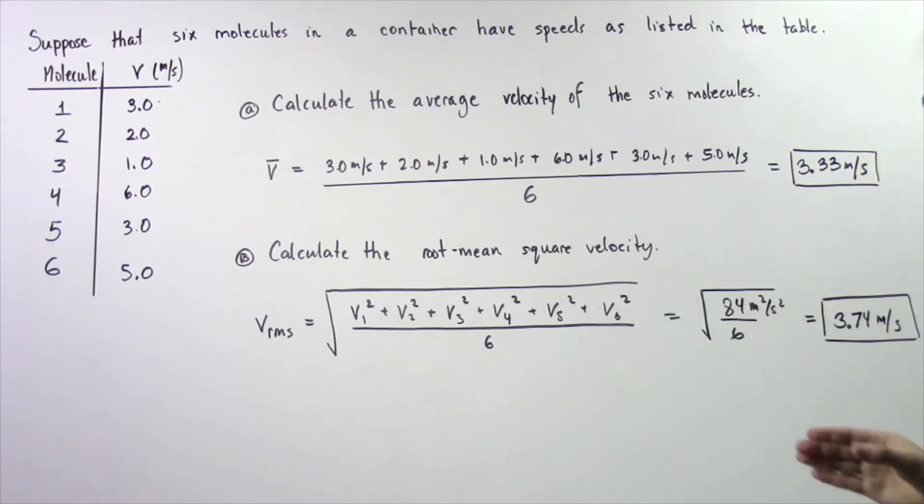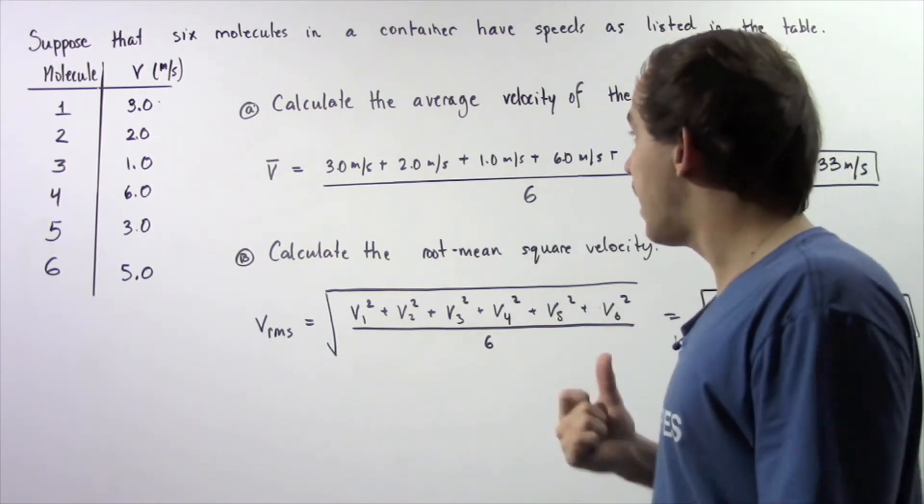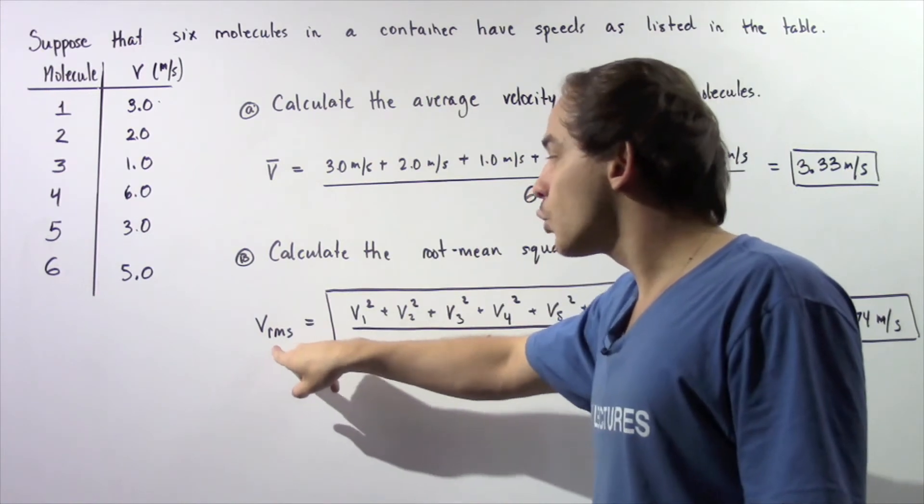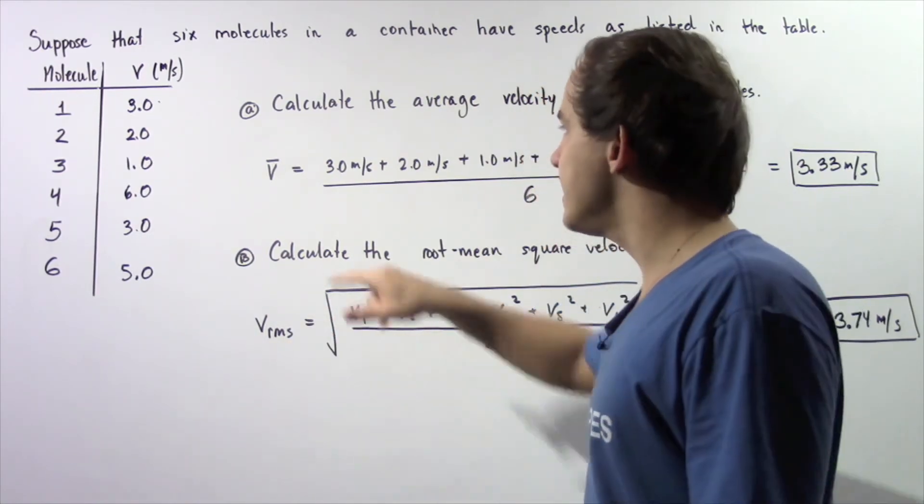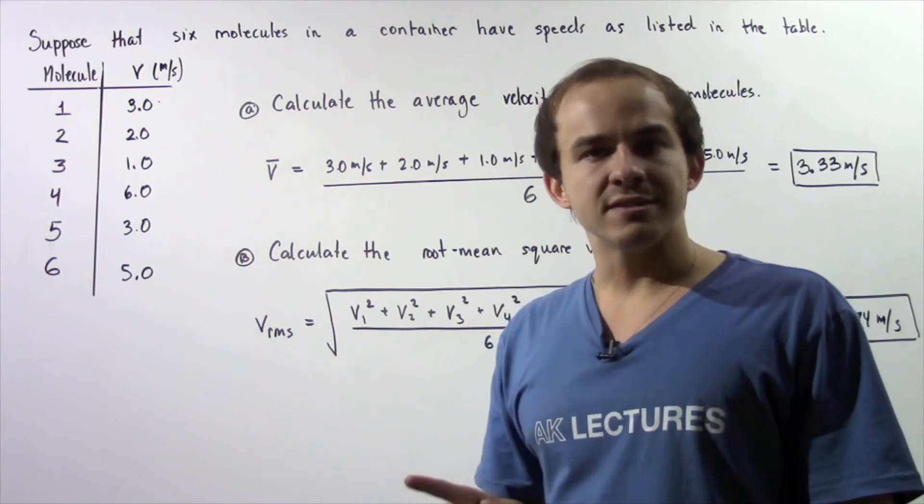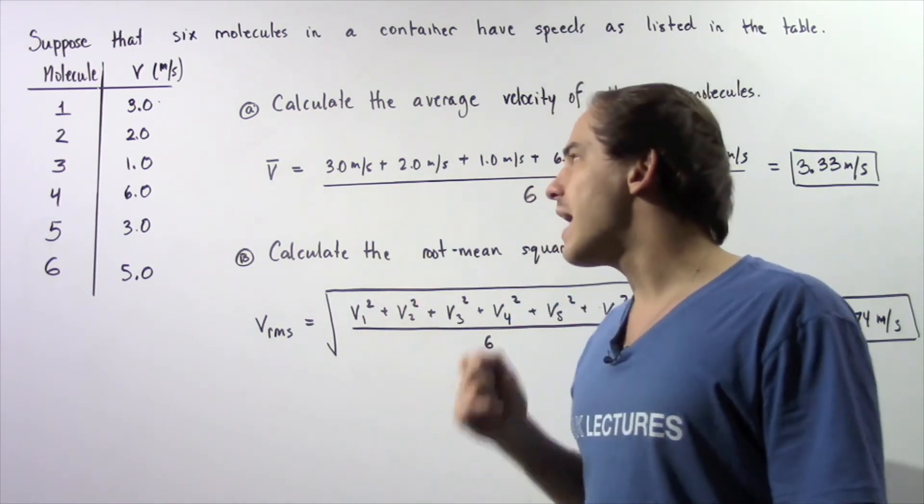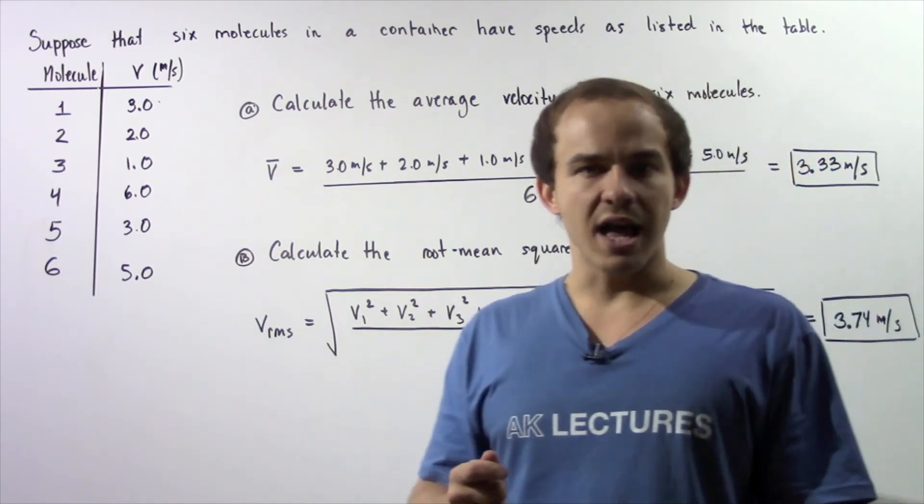Notice these two values are different because by definition the root mean square velocity is not the same thing as the average velocity, although sometimes the values will indeed coincide.